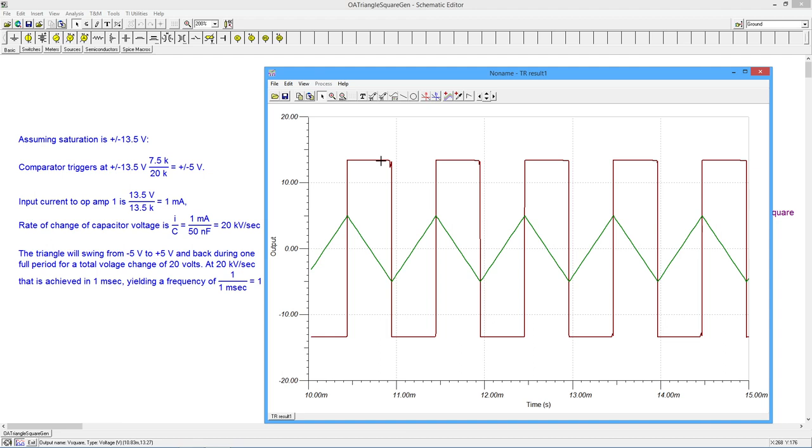This drives the input to the integrator, which again, because it's inverting, that signal goes in the opposite direction. When it gets to the negative value, the comparator switches state. It goes negative. That drives the capacitor again with the current source. And we see the rising. And this just keeps repeating.